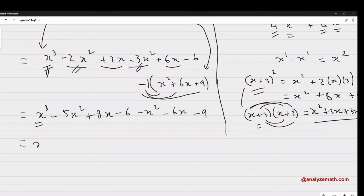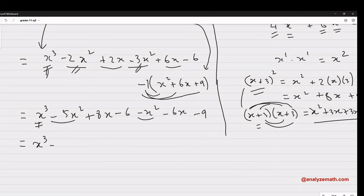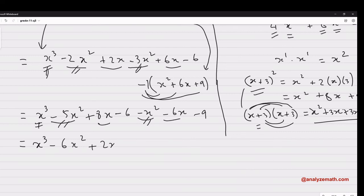x³ is the only term with power 3. Now we have minus 5x² minus x². Variable with the same power we can group. 8x minus 6x. And then minus 6 minus 9, that gives me minus 15.